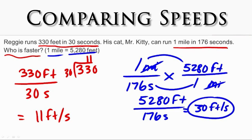So Mr. Kitty's speed as a unit rate is 30 feet per second. Reggie's speed as a unit rate is 11 feet per second. Now we can determine who is faster: Mr. Kitty is faster. He runs at a unit rate of 30 feet per second — almost three times as fast as Reggie.